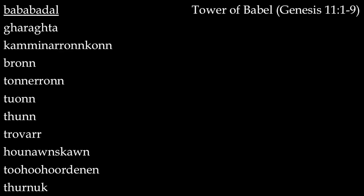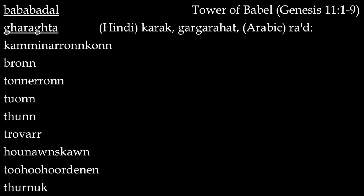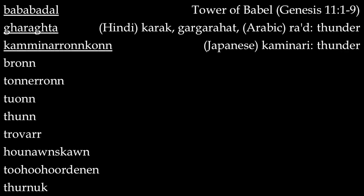Moving on to the next component, we have garakhta. Now there are three words here: karak, gargarahat — those are in Hindi — and in Arabic we have rad, and those all mean thunder. The next component, kaminarankan, is from the Japanese word kaminari for thunder. If you speak Greek, you know that bronne comes from bronte, thunder. And the French speakers out there will recognize tonnerron as derived from tonnerre.